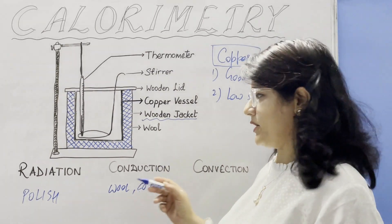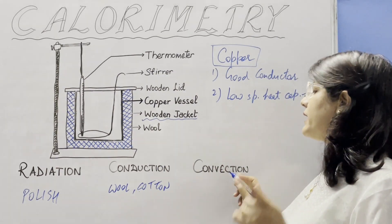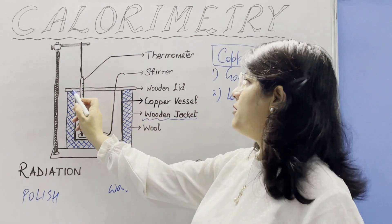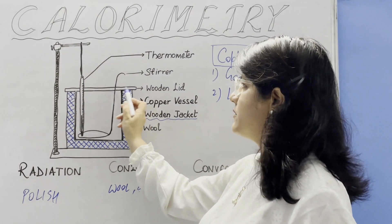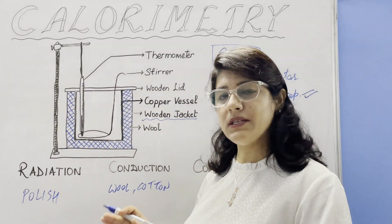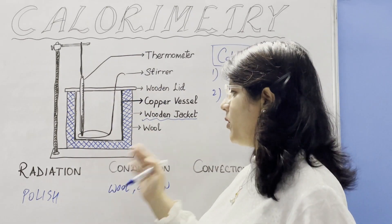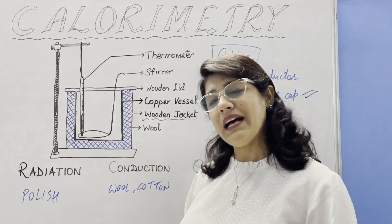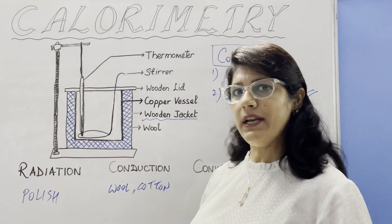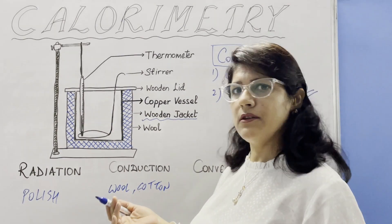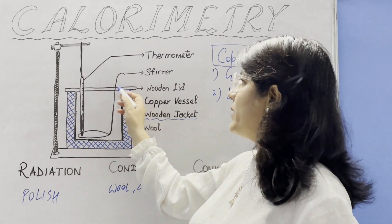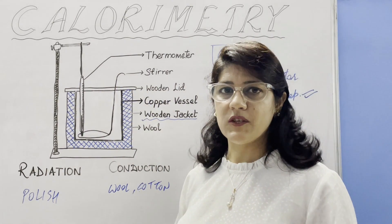To prevent heat loss by convection, a wooden lid is provided over the calorimeter. These three types of heat losses can be minimized with the help of these simple measures. The last question is about the two holes in the wooden lid: one hole is for a thermometer to measure the temperature, and the other is for a stirrer to mix the contents properly.